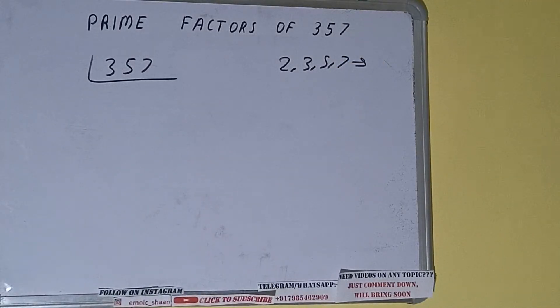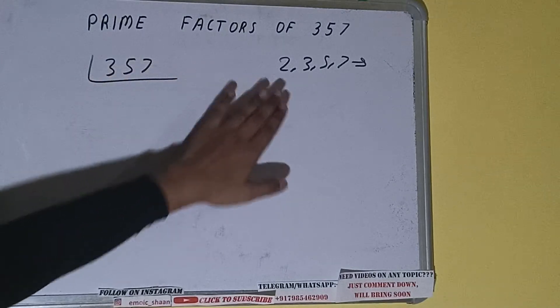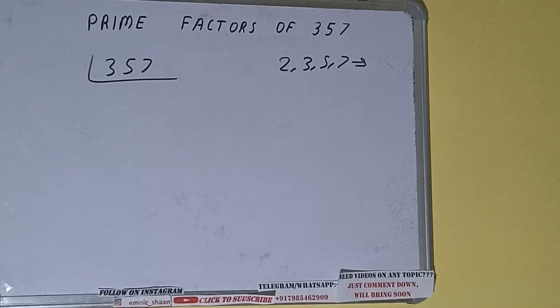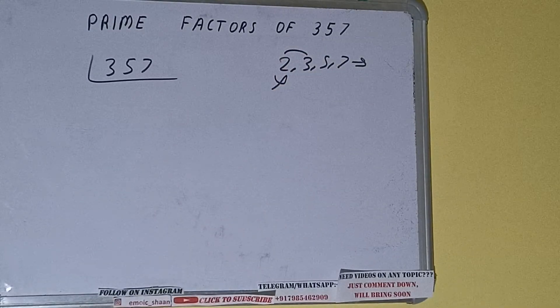We'll be checking with the lowest prime number we have, that is 2. Is the number 357 divisible by 2? Clearly not, because the number is odd. So we'll be going to the next lowest prime number, that is 3.